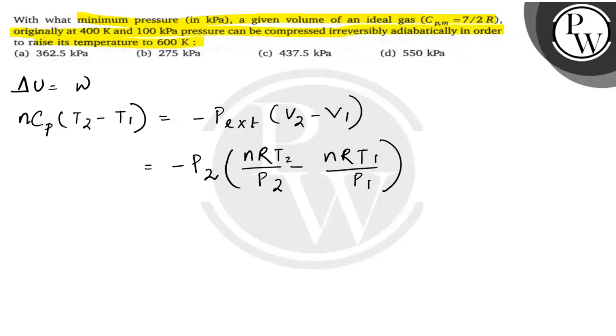Then, then to phir values dalte hain, kya hoga? 5/2 R times (600 - 400) is equal to minus P2 times (RT2/P2 - RT1/P1).